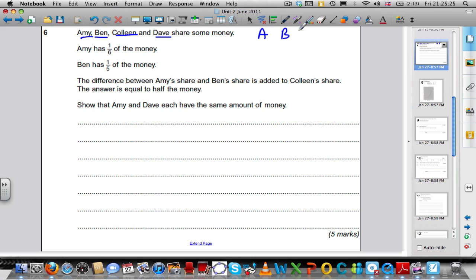Amy has a 6th. Ben has a 5th. The difference between Amy and Ben's share is added to Colleen's share. The answer is equal to half the money. Show that Amy and Dave each have the same amount of money. We want to show that A and D have the same portion of the total amount. Let's start off with this first fact here.